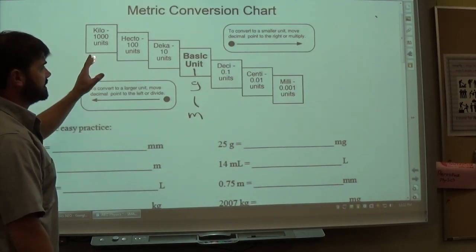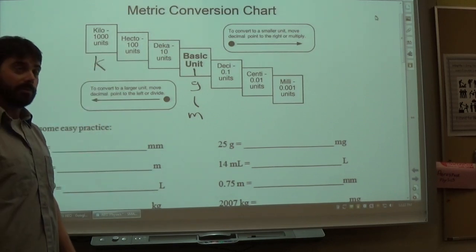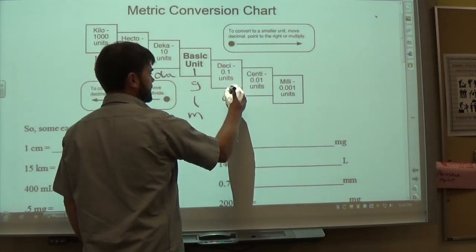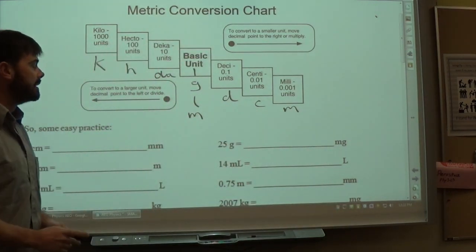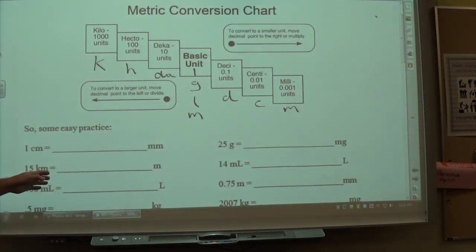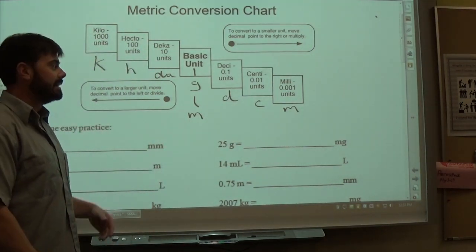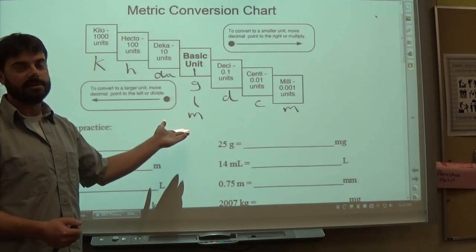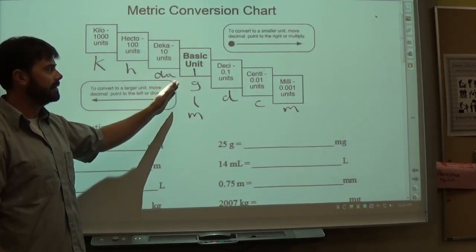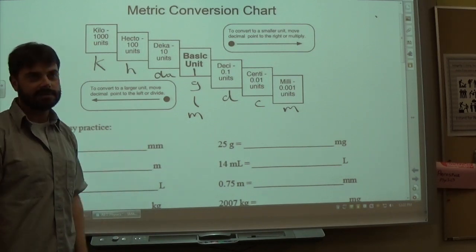There are abbreviations for each prefix. Kilo uses k, hecto uses h, deca uses da, deci uses lowercase d, centi uses c, and milli uses lowercase m. A common point of confusion: meter and milli both use the letter m. If you see an m, g, or l by themselves, it's always the base unit. You only have milli when you see two m's together, like mm.